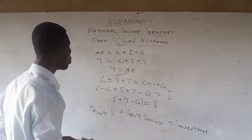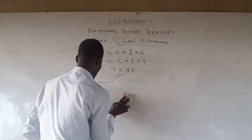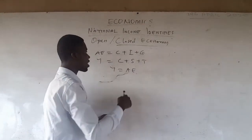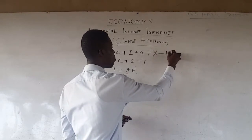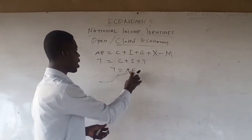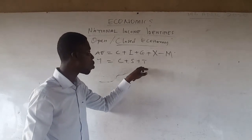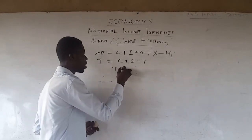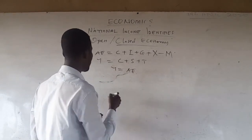Now we are going to do the same for the open economy. In the open economy, our aggregate expenditure now includes exports and imports — we add exports and subtract imports. Our national income identity is the same: we consume, save, or pay taxes.